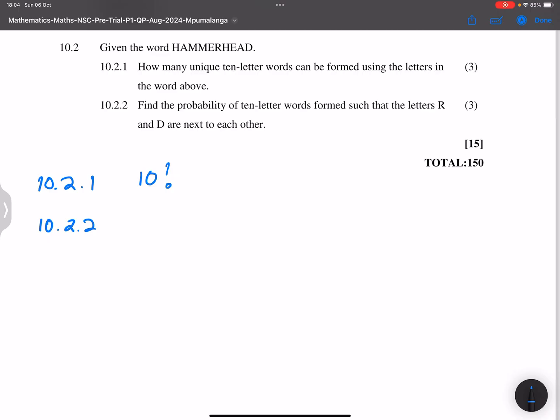So then 10.2.2, they say, find the probability of 10 letter words formed such that the letter R and D are next to each other. Now, I want us to really think about this. So we've got 10 letters. So that's 1, 2, 3, 4, 5, 6, 7, 8, 9, and 10. So these are all the spaces. Now, we want D and R to be together. So there's R, there's D.